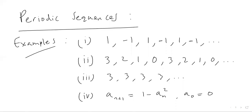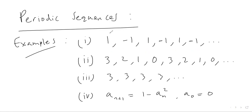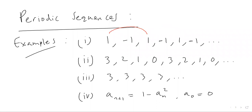Today's video is about periodic sequences — sequences that repeat themselves after a certain number of terms. The first example, one, minus one, one, minus one, one, minus one, is a sequence that repeats every two terms. Both the number one and the number minus one repeat after every two terms. This is called a periodic sequence of order two.